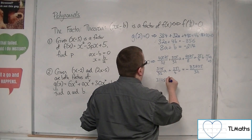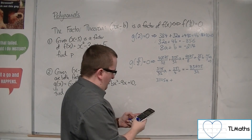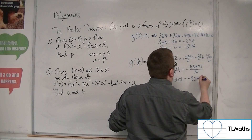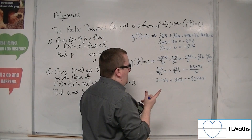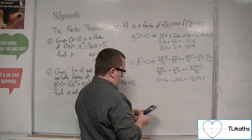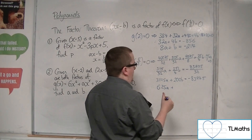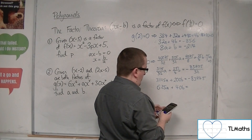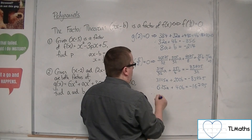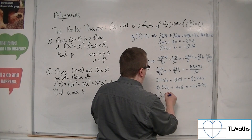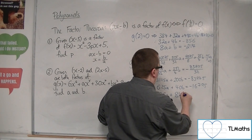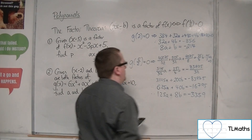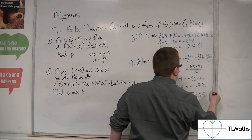Multiplying everything through by 32 gives 3125a plus 200b equals minus 83975. Dividing through by 5 gives 625a plus 40b equals minus 16795. Dividing through by 5 again gives 125a plus 8b equals minus 3359. That's equation 2.